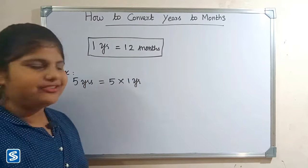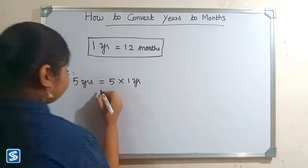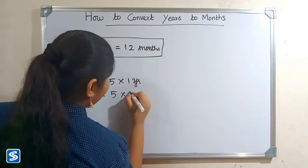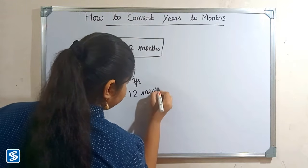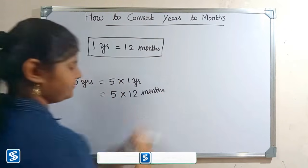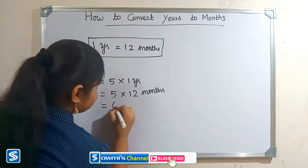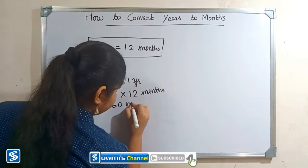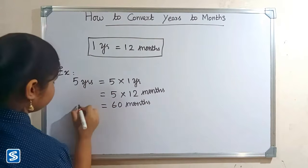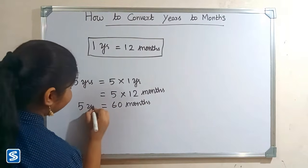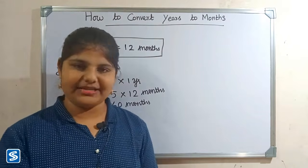Now we have to substitute 12 months in the place of one year, so five multiply 12 months. Five multiply 12 months will be 60 months. So five years is equal to 60 months. Next we will take one more example.